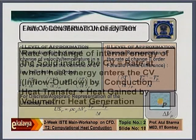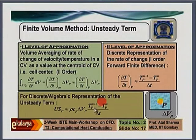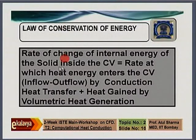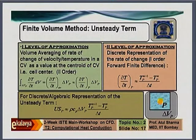Substituting the first-order forward difference for the time derivative, the discrete or algebraic form of the unsteady term is obtained. The left-hand side — rate of change of internal energy of the solid inside the control volume — is converted to an algebraic equation: rho × Cp × delta_VP × (TP^(n+1) − TP^n) / delta_t.